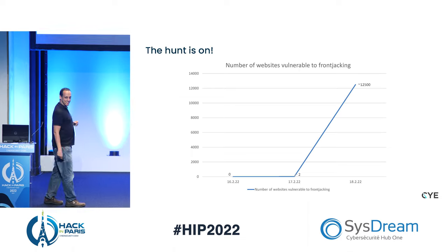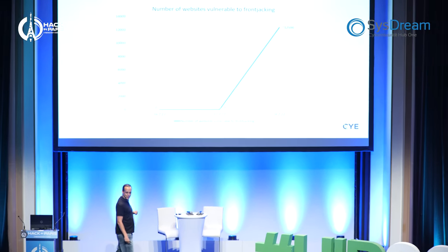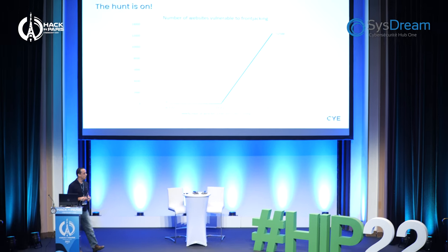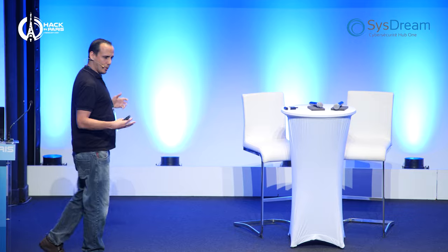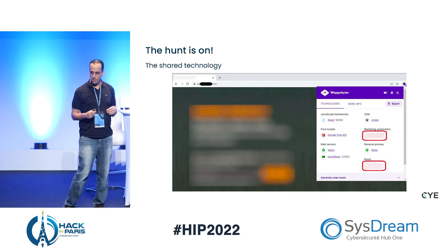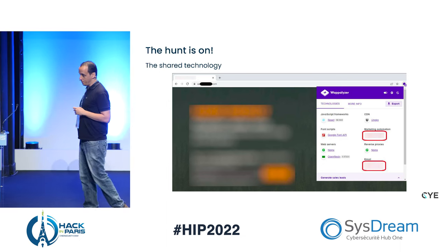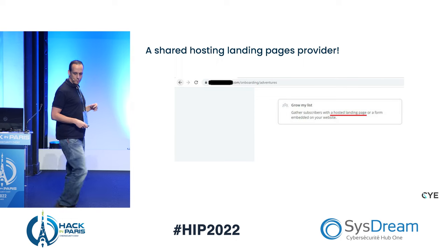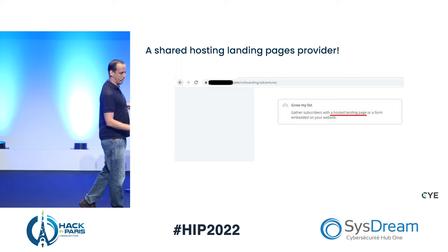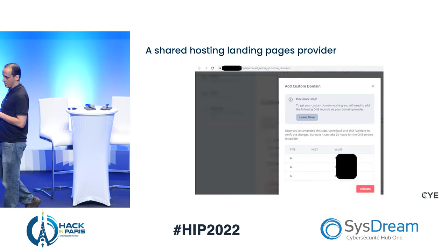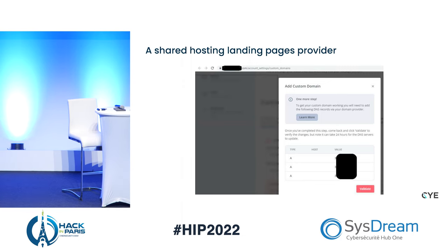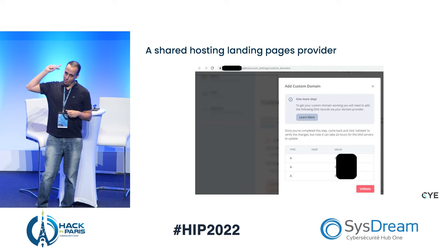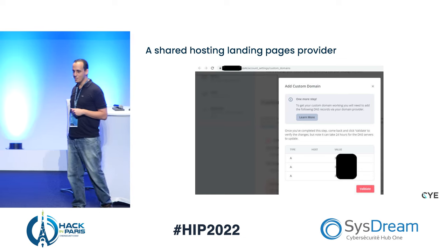I really like this graph: zero vulnerable websites on February 16th, two websites vulnerable to front-jacking on January 17th, and 12,500 websites on the 18th. We started to think: what is the common technology? We found a shared hosting landing pages provider — you can create your own landing page for free with a free tier. We entered their system, registered, and found that three IP addresses all point to the same 12,500 websites. We created our own landing page for front-jacking and then hijacked our own landing page as a proof of concept — on the left is the website we created, on the right the same website hijacked.